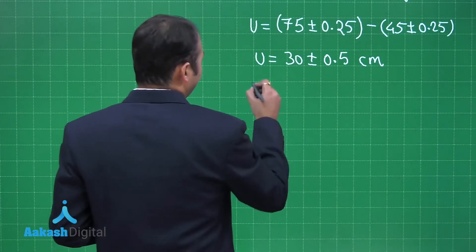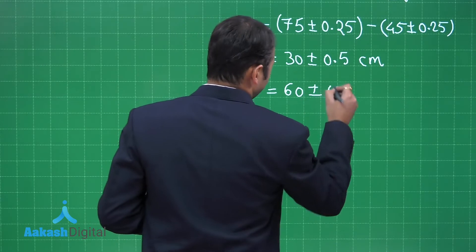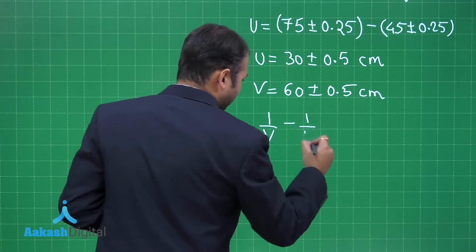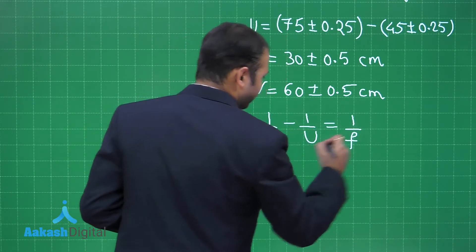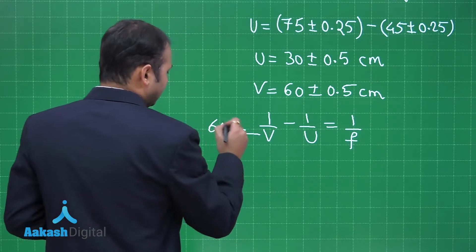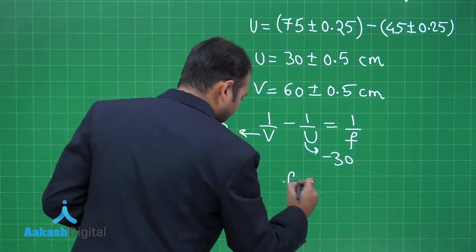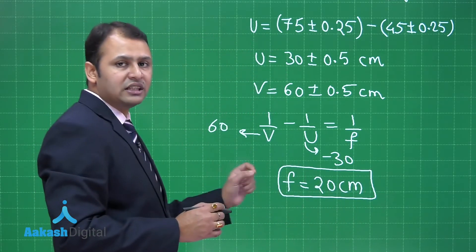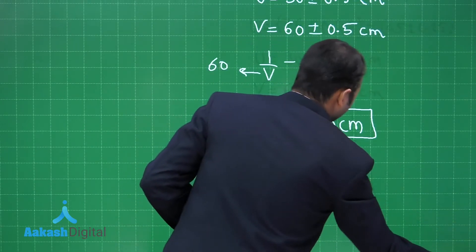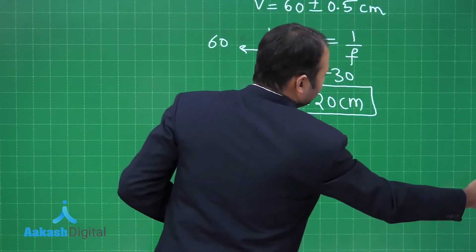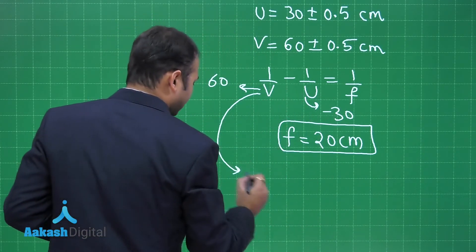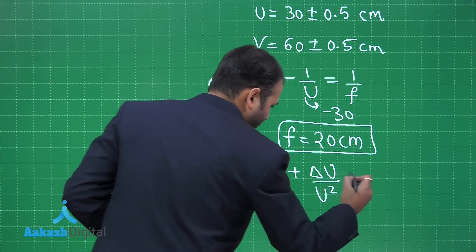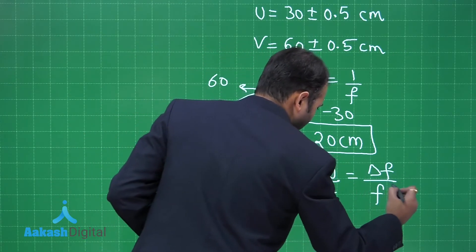Similarly, v = 60 ± 0.5 cm, so Δv = 0.5. Using the lens formula 1/v − 1/u = 1/f, with v = 60 and u = −30, the focal length f = 20 cm. Now we need the percentage error in focal length. Using the error formula: Δv/v² + Δu/u² = Δf/f².